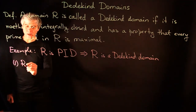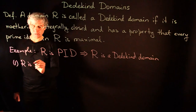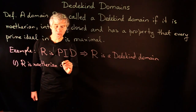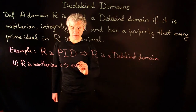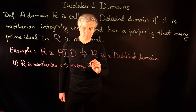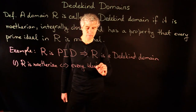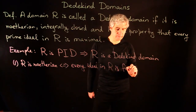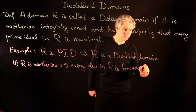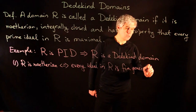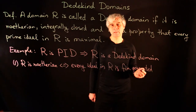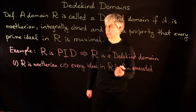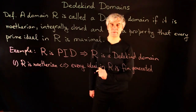We know that R is Noetherian if and only if every ideal in R is finitely generated. But in a PID, every ideal has a single generator by definition, and thus a PID is Noetherian.